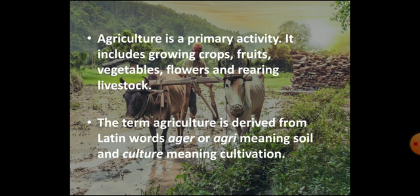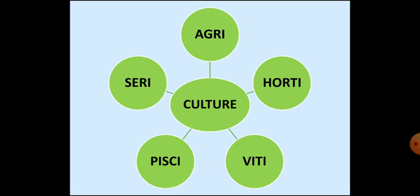Agriculture is a primary activity. It includes growing crops, fruits, vegetables, flowers and rearing of livestock. Children, the word agriculture is taken from Latin words — 'ager' or 'agri' means soil and 'culture' meaning cultivation. The cultivation can be of different kinds, for example, agriculture which is also called farming.